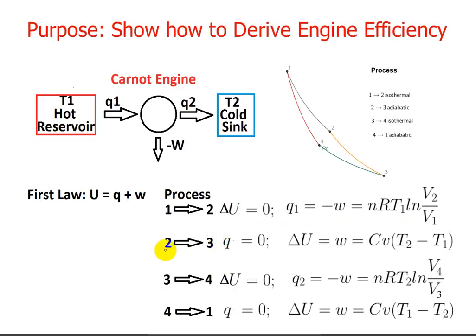The process from state 2 to state 3 is adiabatic. By definition, Q is zero. So if you follow the first law, delta U has got to be equal to W, and that's going to be CV times T2 minus T1.